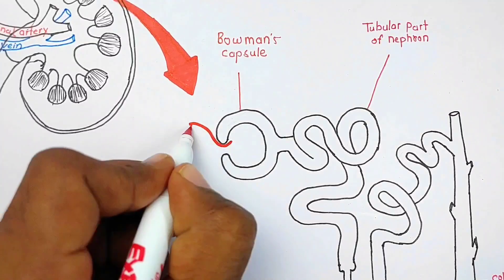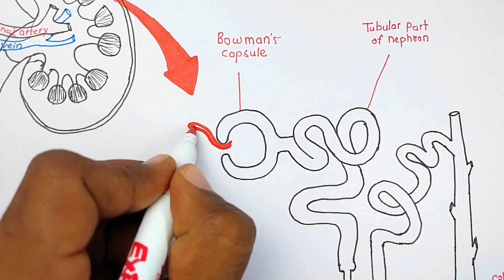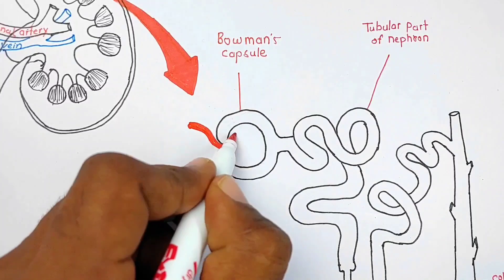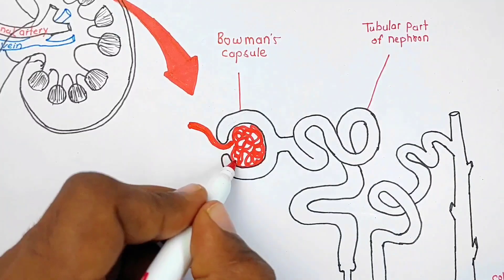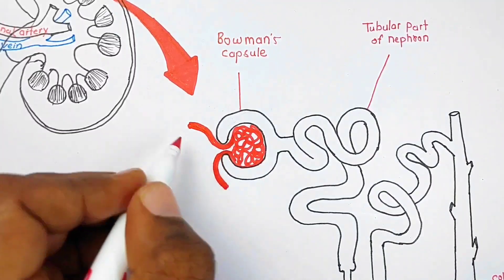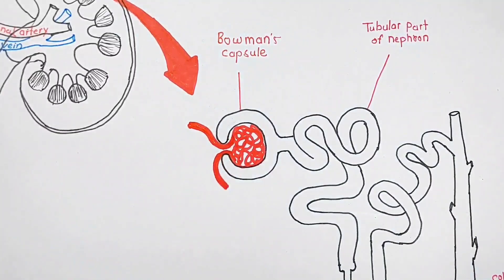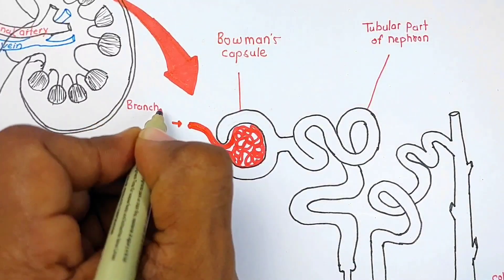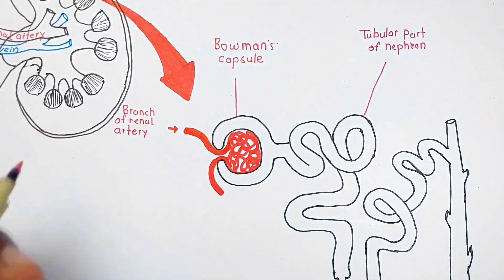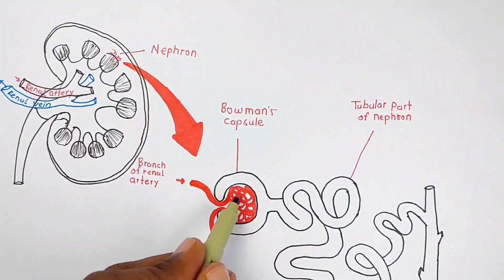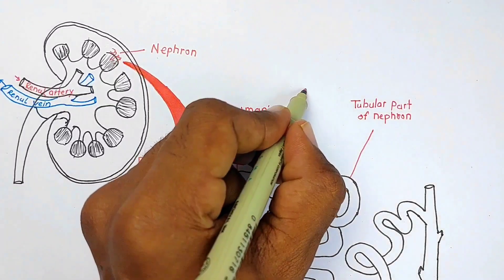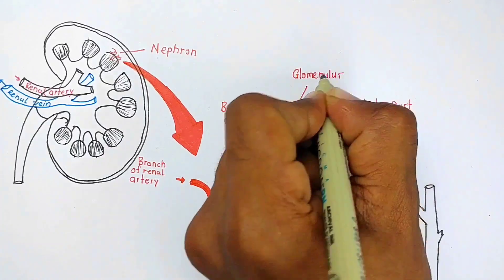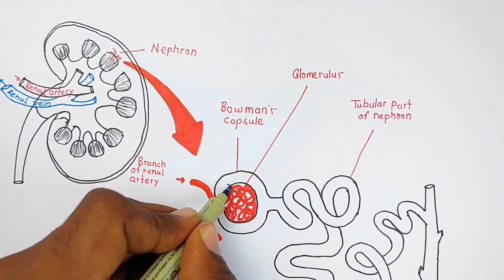Now let's focus on the head of the nephron — the cup-like structure called Bowman's capsule. Blood capillaries enter into Bowman's capsule, coiling many times and forming a bundle of capillaries, then exit from Bowman's capsule. Blood is transferred to Bowman's capsule through a branch of the renal artery. This coiling bundle of blood capillaries is called the glomerulus.